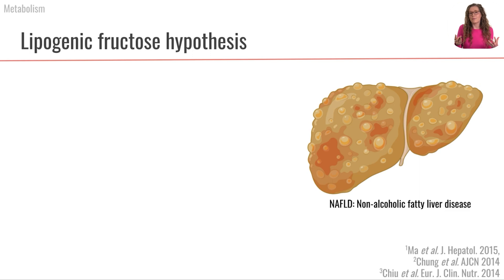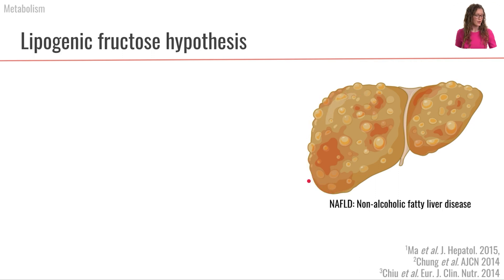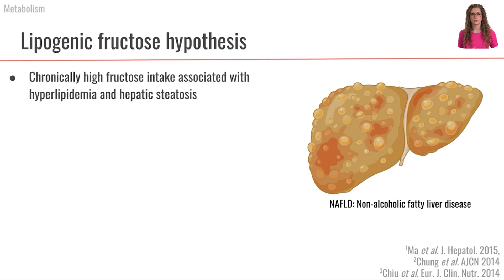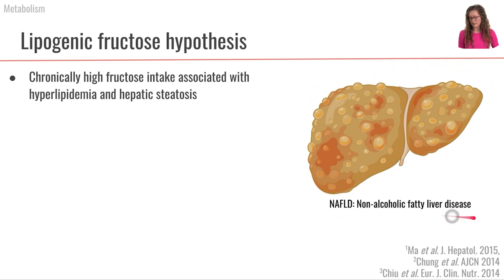There is a hypothesis that fructose is more lipogenic because it enters glycolysis after the heavily regulated phosphofructokinase step, and the thought is that it can drive the liver to produce more fat, accumulate fat in the liver, and lead toward steatosis. Studies, primarily in animals, showed that chronically feeding high fructose is associated with hyperlipidemia — higher levels of fats in the blood — as well as hepatic steatosis, which is the accumulation of fat in the liver shown here. This can contribute to non-alcoholic fatty liver disease, a spectrum of conditions initiated from lipid accumulation in the liver.